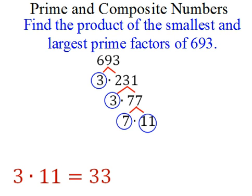Finally, I look at the smallest prime factor, which is 3, and the largest prime factor, which is 11. Easy to identify because I've circled them. 3 times 11 is 33.